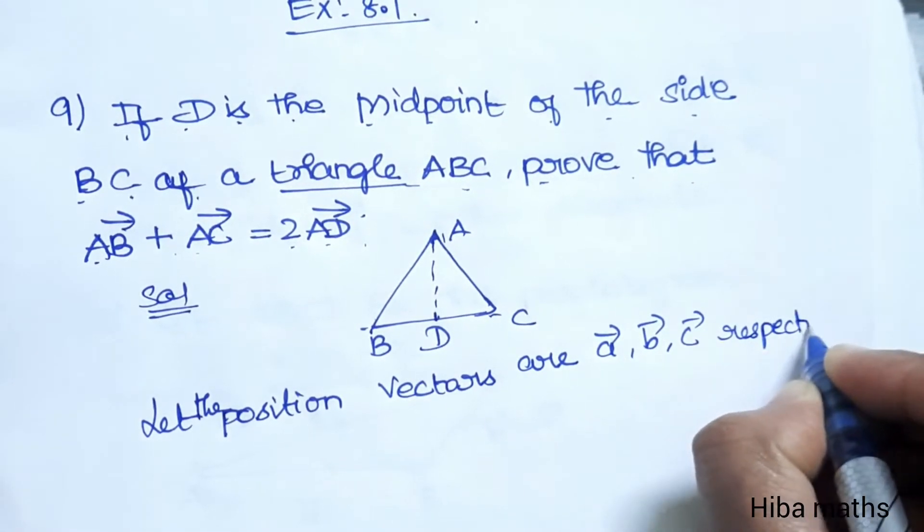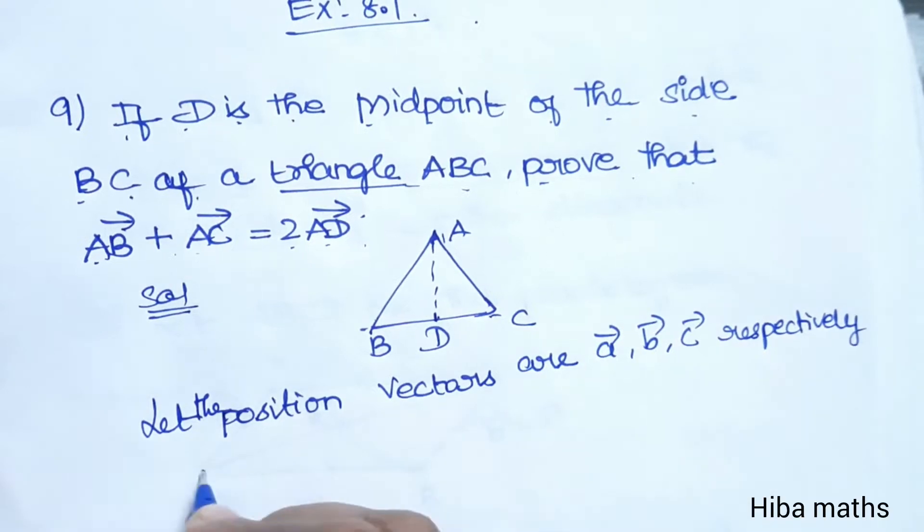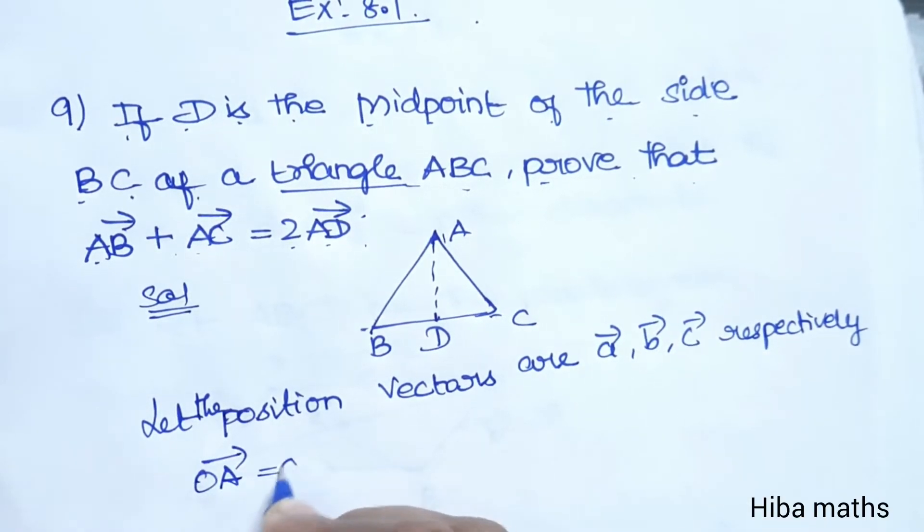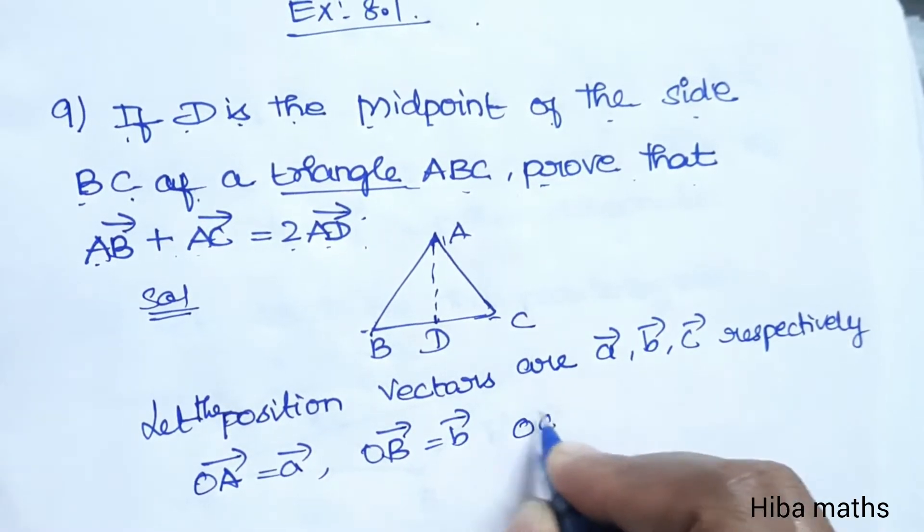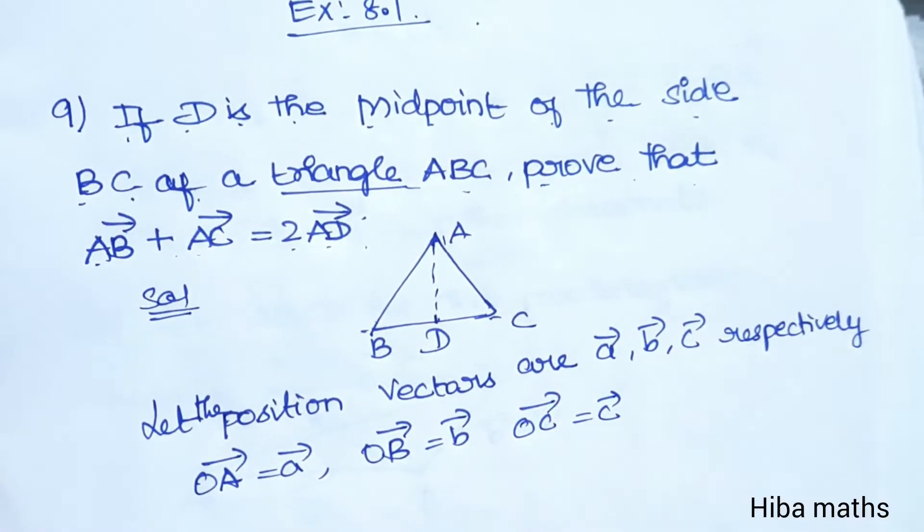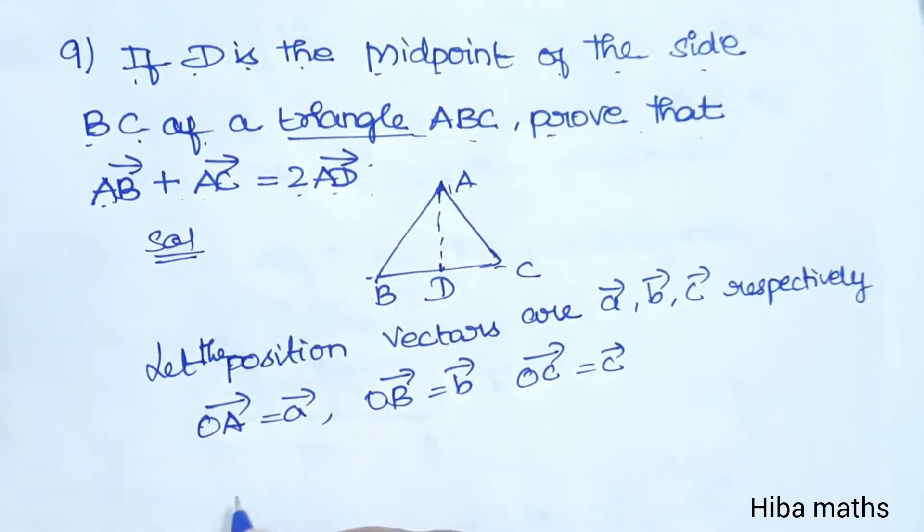Let the position vectors be A vector, B vector, C vector respectively. So OA vector is A vector, OB vector is B vector, OC vector is C vector.